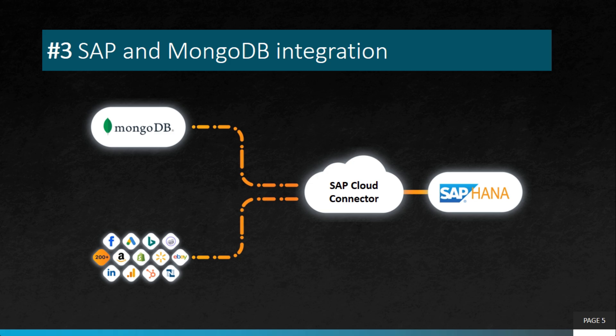Both can be integrated — this integration enables businesses to store and analyze large volumes of data generated by SAP systems using MongoDB. Use cases include IoT scenarios where data generation is very random with no keys involved. You store it in NoSQL format, analyze the data, convert it into SQL format, and then store it in SAP HANA.